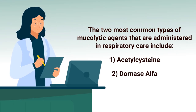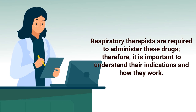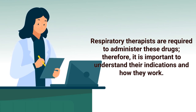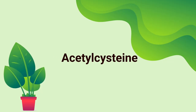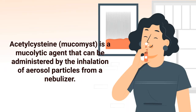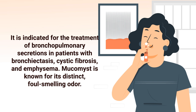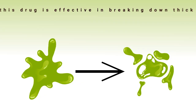The two most common types of mucolytic agents administered in respiratory care include acetylcysteine and dornase alpha. Respiratory therapists are required to administer these drugs, so it is important to understand their indications and how they work. Acetylcysteine, also known as Mucomist, is a mucolytic agent that can be administered by inhalation of aerosol particles from a nebulizer. It is indicated for the treatment of bronchopulmonary secretions in patients with bronchiectasis, cystic fibrosis, and emphysema.